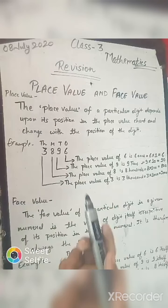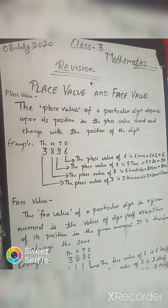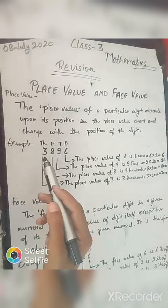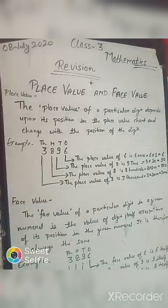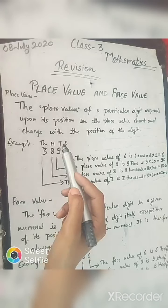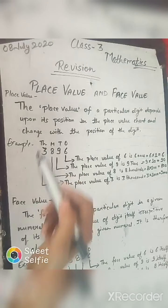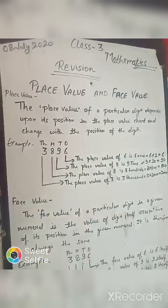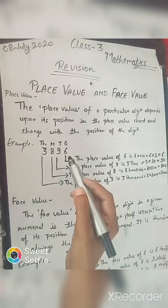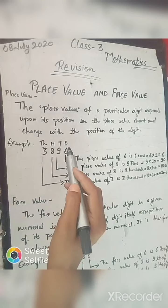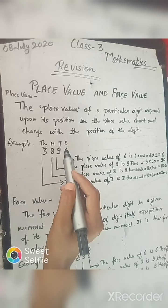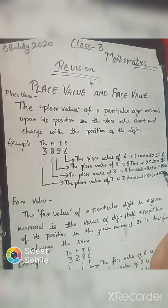Look at the example. The number is 3896, and we have to find the place value of all digits. We can see: 6 is at the ones place, 9 at the tens place, 8 at the hundreds place, and 3 at the thousands place. Starting from the ones place: the place value of 6 is 6 × 1 = 6. The place value of 9 is 9 × 10 = 90, because 9 is at the tens place.